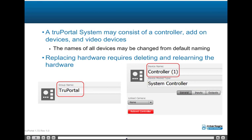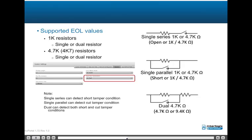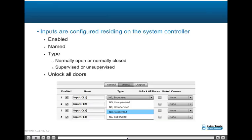A TruePortal system may consist of a controller, add-on devices, and video devices. The names of all devices may be changed from default. Replacing hardware requires deleting and relearning the hardware. TruePortal supports five end-of-line resistor types: 1K resistors (single or dual) and 4.7K resistors (single or dual). Inputs are configured on the system controller and may be enabled, named, and type configured. Input type is configured as normally open or normally closed, and supervised or unsupervised, with an option to unlock all doors if the alarm input is from an alarm or emergency system.